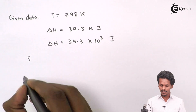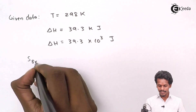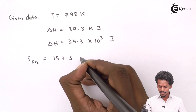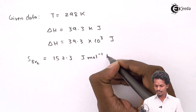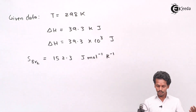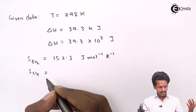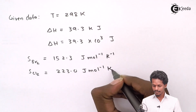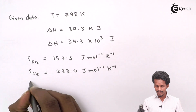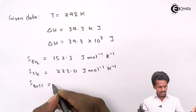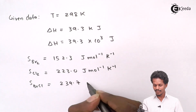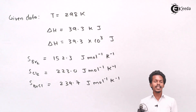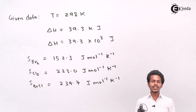For the first reactant, bromine molecule Br2, the entropy S(Br2) = 152.3 J/mol/K. For chlorine Cl2, the entropy S(Cl2) = 223.0 J/mol/K. And for BrCl, the entropy S(BrCl) = 239.7 J/mol/K. These are the values provided to us.